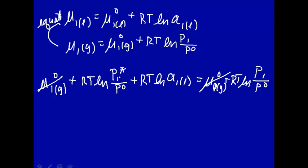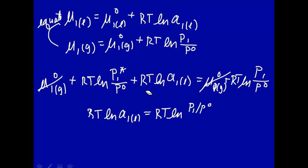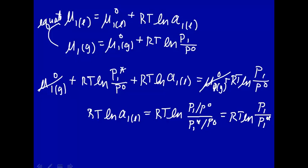Rearranging, RT times the natural log of the activity of one in the liquid phase equals RT times the natural log of P1 over P1-star. All the P0 standard state terms cancel out. So this is just equal to RT times the natural log of the pressure above the solution in the mixture, divided by the pressure above the solution for the pure state. If RT log A equals RT log of this ratio, this implies that the activity of substance one in the liquid phase is equal to the pressure of one divided by the pressure of one if it were pure.